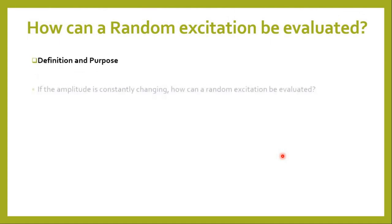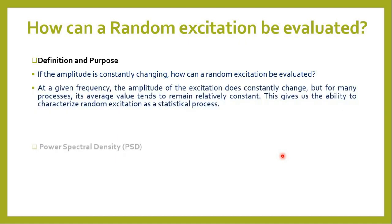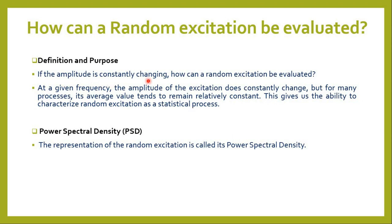The question arises: how can random vibration be evaluated since it is not constant? Although the amplitude of excitation constantly changes, for many processes its average value tends to remain relatively constant. This gives us the ability to characterize random excitation as a statistical process. When we talk about root mean square or average, that value is relatively constant for a respective frequency band. Based on that, one method is the power spectral density (PSD) plot — the representation of random excitation is called a power spectral density.